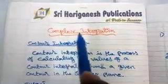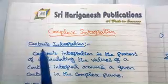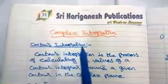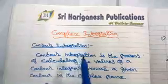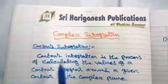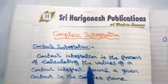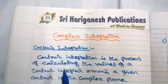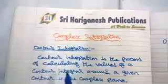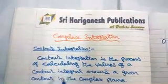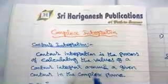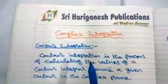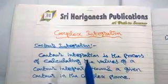Contour integration is the process of calculating the values of a contour integral around a given contour in the complex plane. In the contour integral, there are three types.